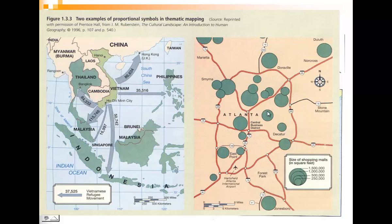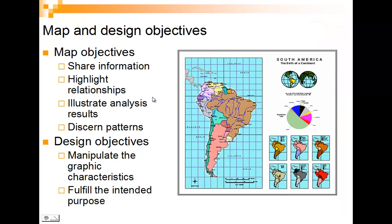Here's a proportional symbol map showing shopping malls — the larger the dot, the more the shopping mall space. And here's an immigration map from Vietnam. You can see the thicker the arrow, the more people going there — more to Hong Kong versus Thailand and Malaysia, and less to Singapore and the Philippines.